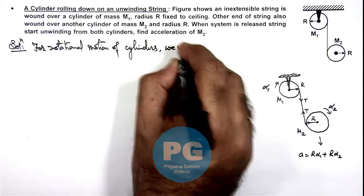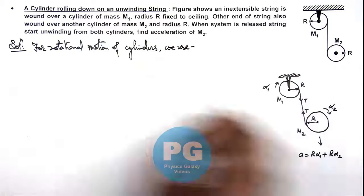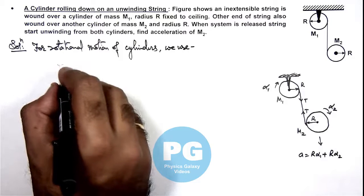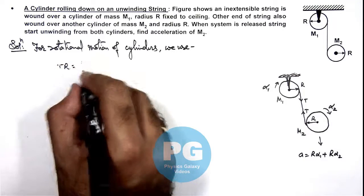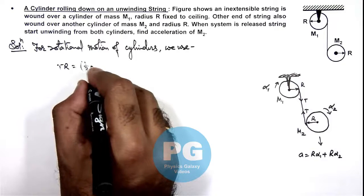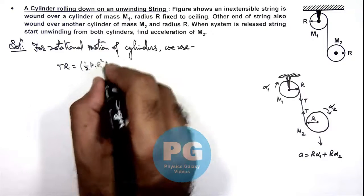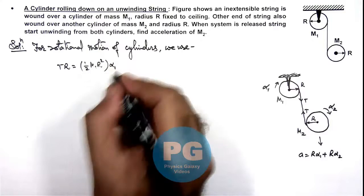For rotational motion of cylinders, we can write TR is equal to half m1 R squared multiplied by alpha 1.